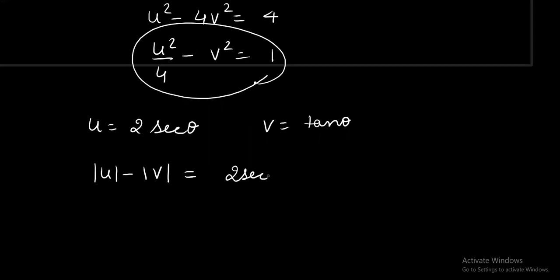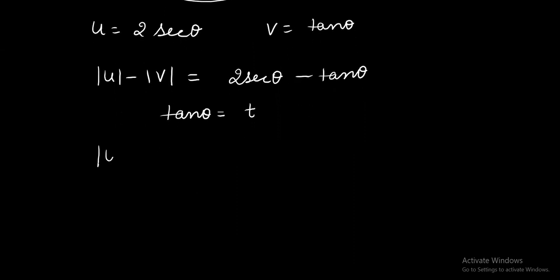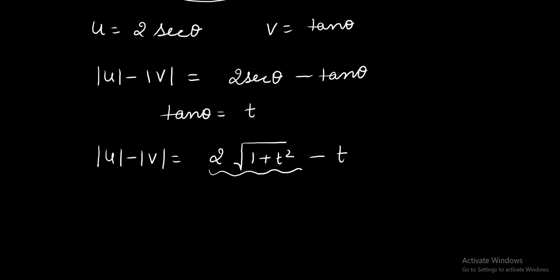|u| − |v| can now be written as 2 sec θ − tan θ, and I need to get its minimum value. Instead of solving in trigonometry, I am converting to algebra using the substitution tan θ = t, where t can be any real number from −∞ to +∞. So |u| − |v| = 2√(1 + t²) − t, and I need its minimum value. I will discuss both an algebraic and a calculus approach.